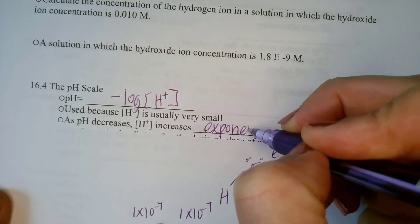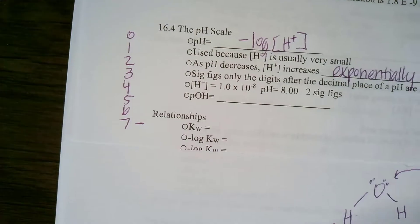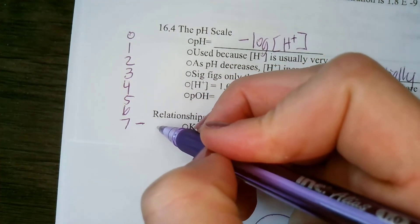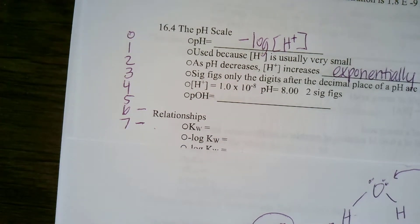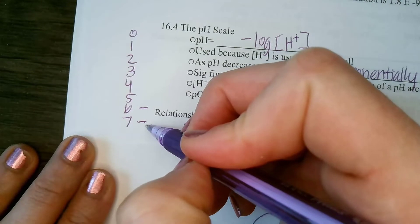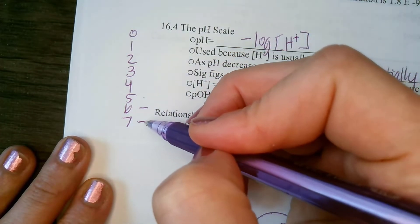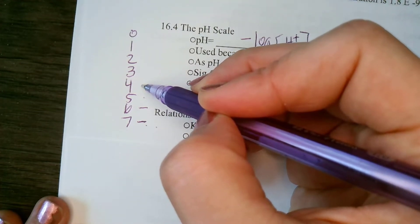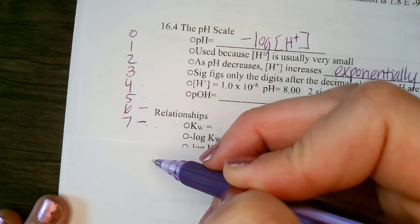The pH scale runs from 0 to 14, with 7 being neutral. At pH 7, we have equal values of hydronium and hydroxide — 1×10⁻⁷ — and this negative 7 relates to neutral. If I go from a pH of 7 to a pH of 6, I've moved the exponent by a power of 10, so pH 6 is 10 times more acidic than pH 7. A pH of 5 is 100 times more acidic than pH 7, and a pH of 4 is 1,000 times more acidic than pH 7.